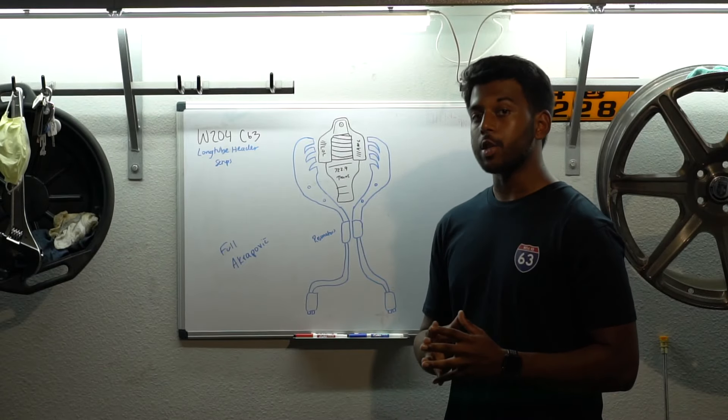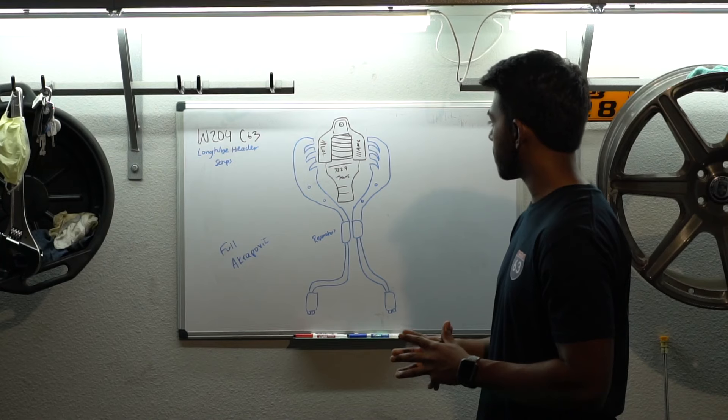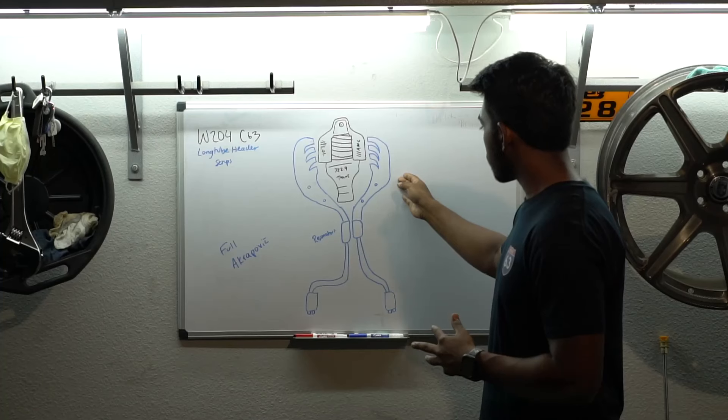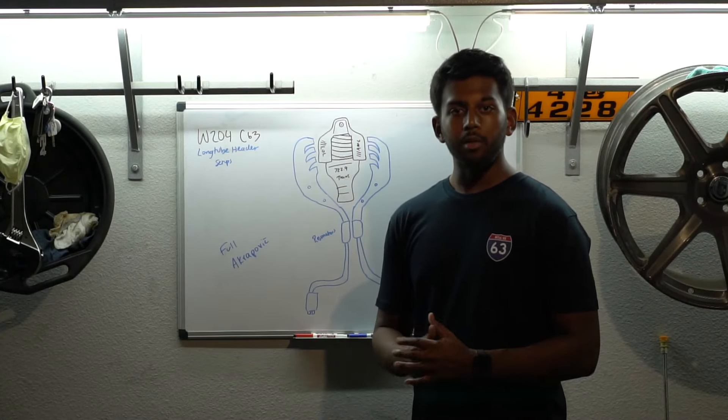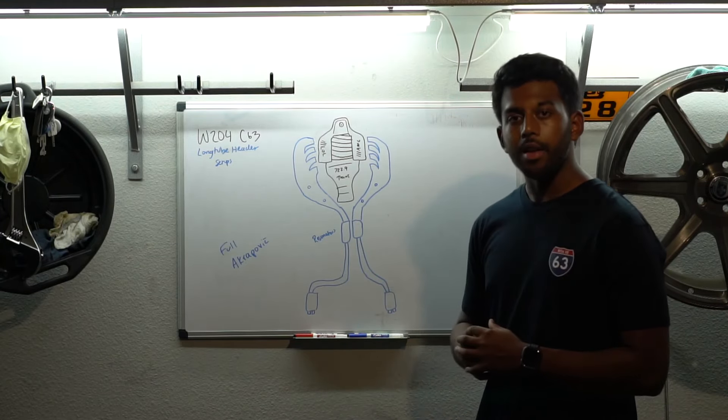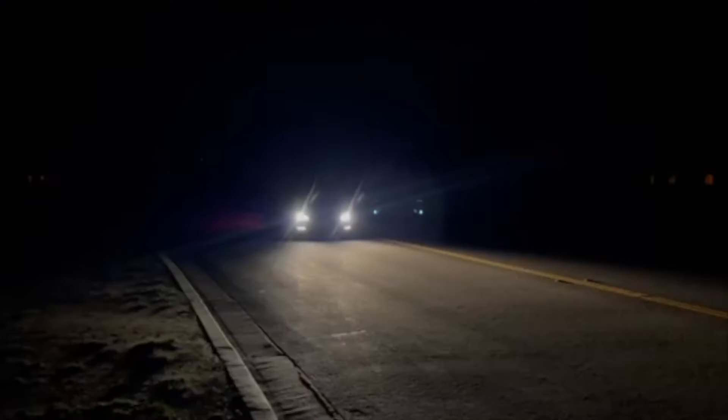And last, but certainly not least, we have the full titanium Akrapovic exhaust W204 C63. This includes their long tube headers, in titanium, it also has a pair of resonators, in titanium, and their own mufflers and their own setup, in titanium. So very cool, very expensive, but definitely never even, like, seen one of these cars with this exhaust in person before. Lucky enough to have a follower that does have the system, which is pretty cool, and here's what that sounds like.